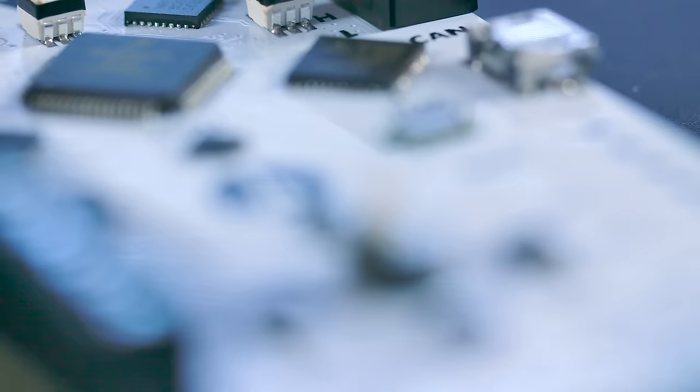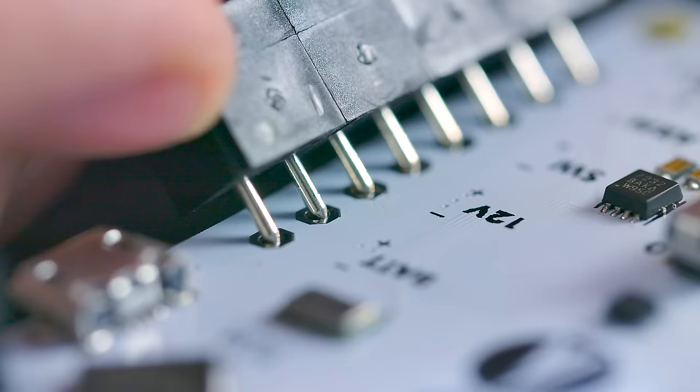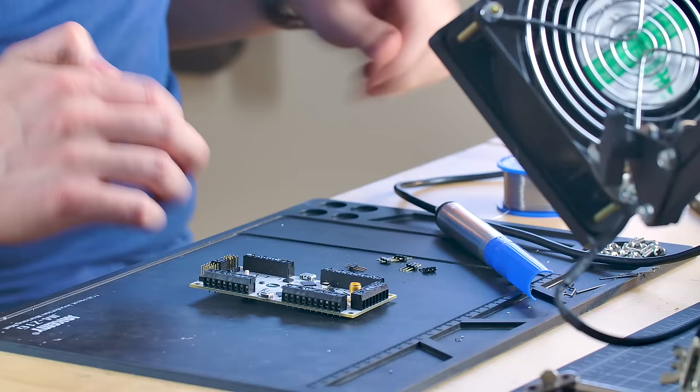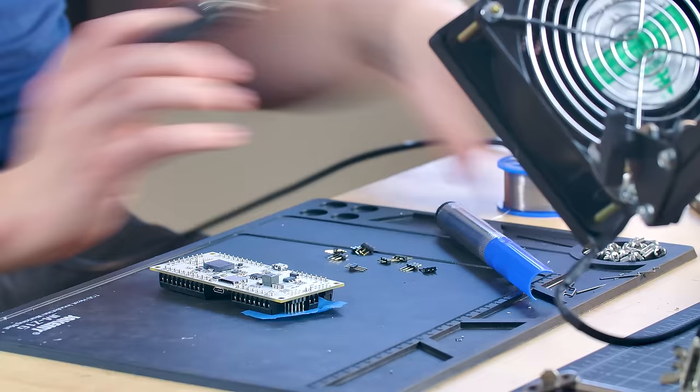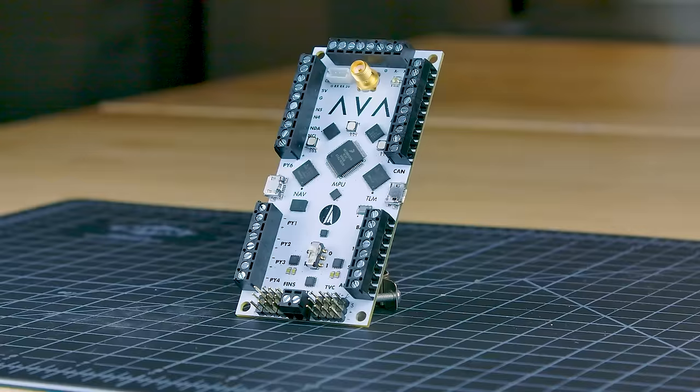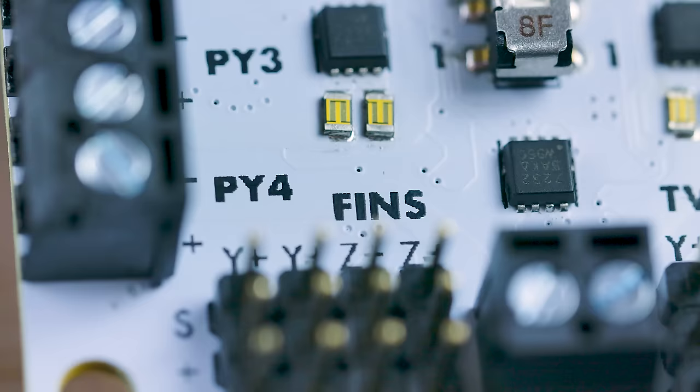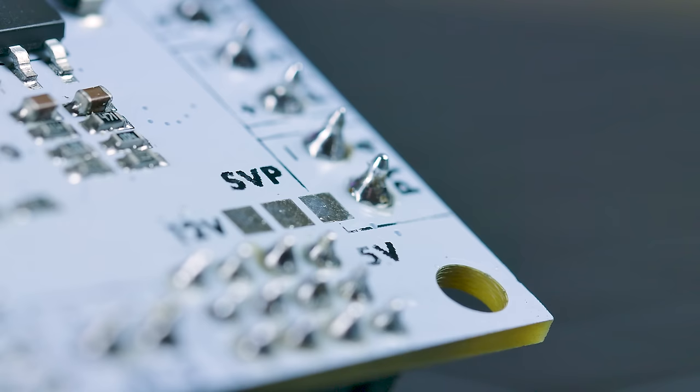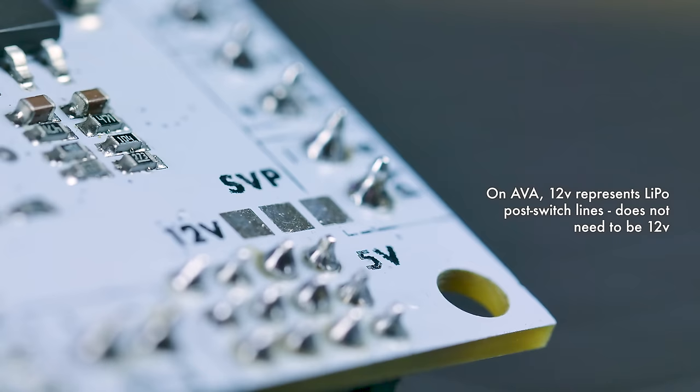In terms of outputs, let's work our way around the board, starting at the bottom. Down here, we have eight PWM outputs. Four are labeled for fins, and four for thrust vector control hardware. As AVA is for all vehicles, these can be split up in any way. The pins can be configured to run off of regulated five-volt power, or direct from a lithium polymer battery by bridging a small solder pad on the back.